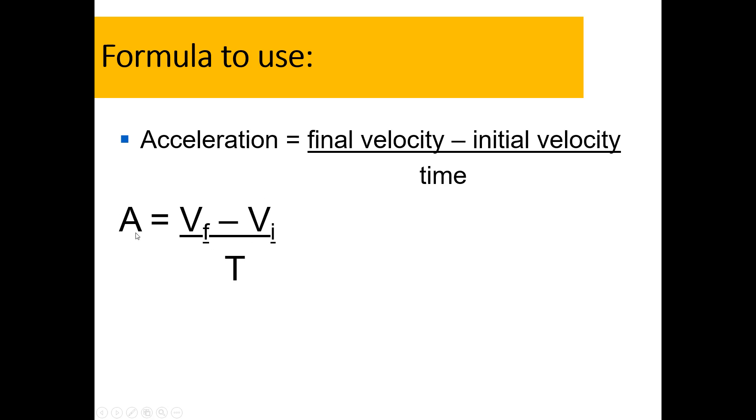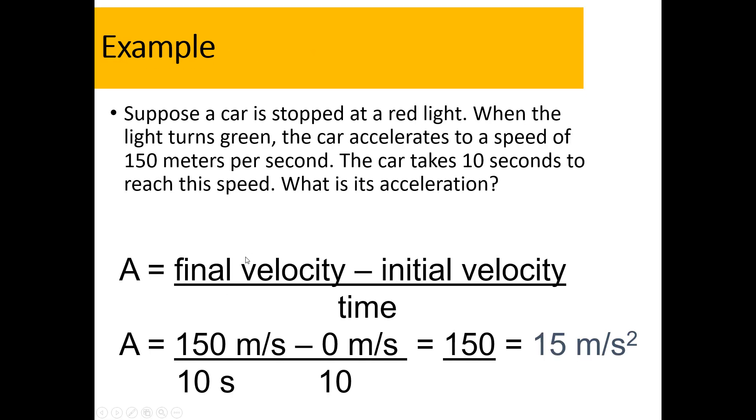Put this formula in your notes. Acceleration is VF minus VI divided by T. A stands for acceleration. VF stands for final velocity, that's the speed at the end of our problem. And then we're going to subtract initial velocity from that. And then we're going to divide that answer by time.